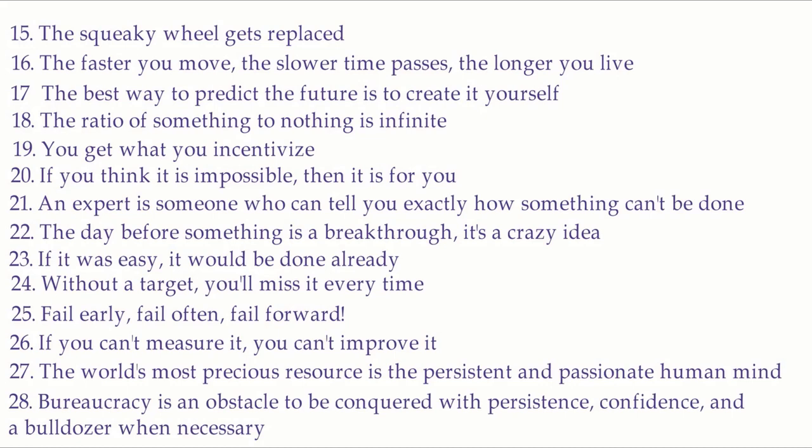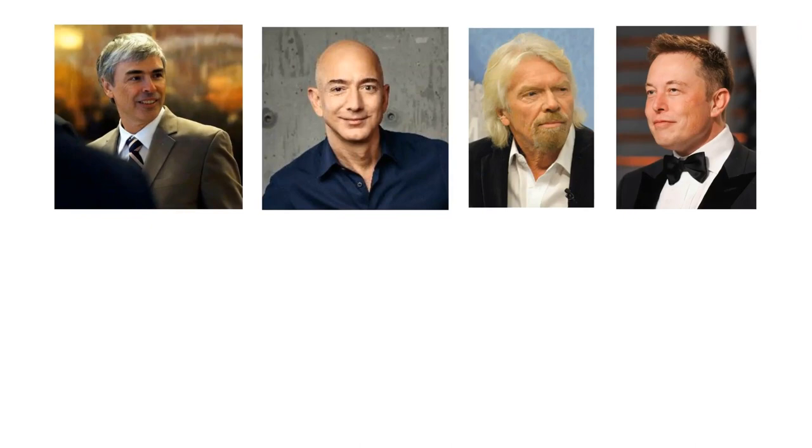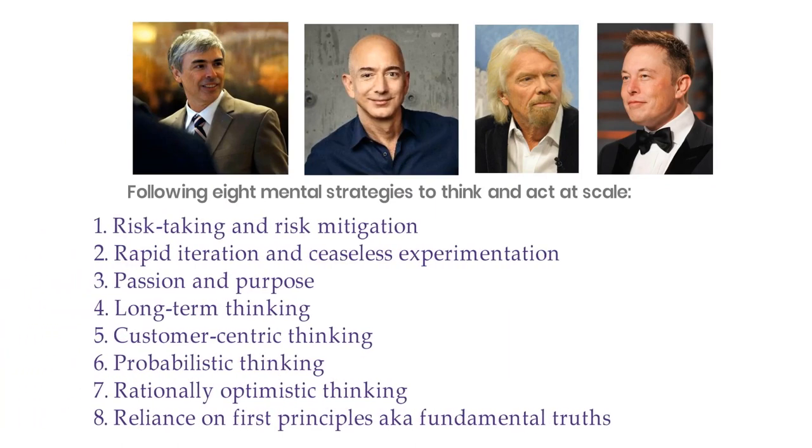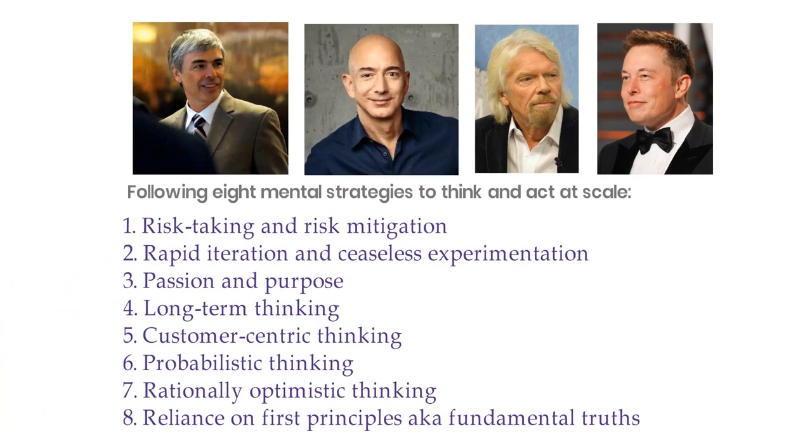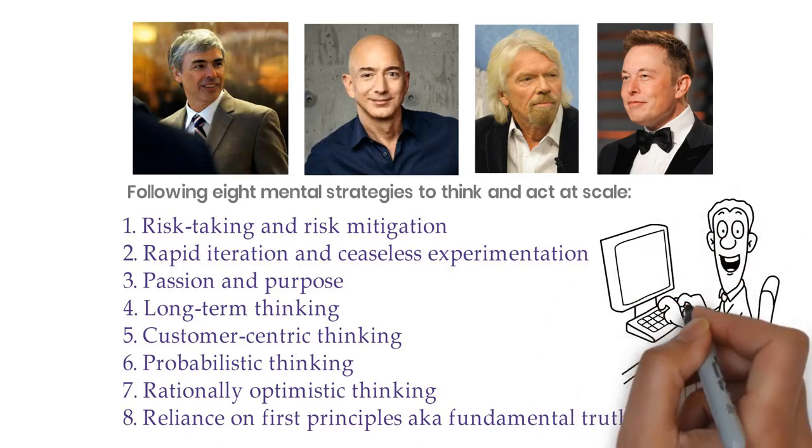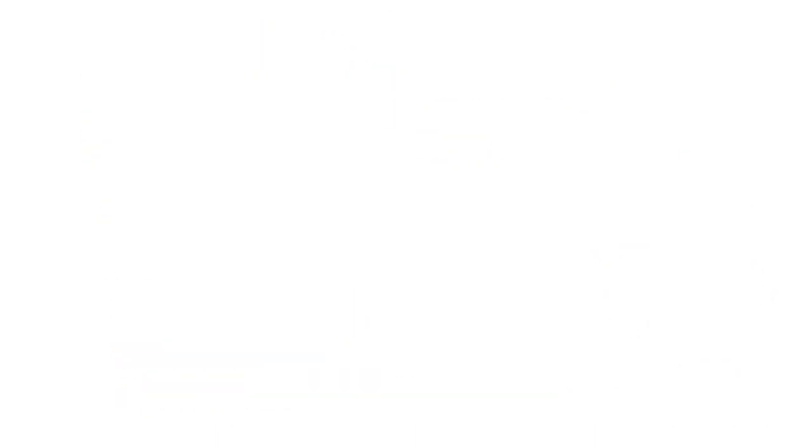By studying and analyzing successful entrepreneurs who built multi-billion-dollar companies that changed the world, authors noticed that all of them pursued bold ideas. Billionaires like Elon Musk, Richard Branson, Jeff Bezos, and Larry Page all used the same following eight mental strategies to think and act at scale. Through their case studies, authors presented detailed advice and lessons on how to raise the game by thinking at scale.